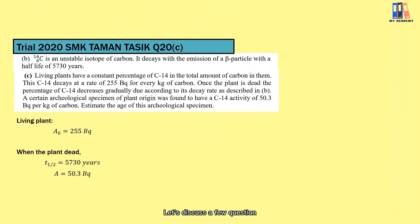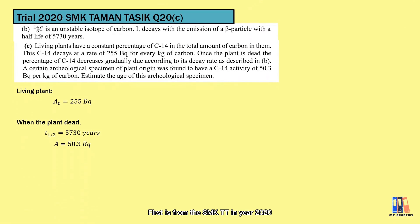Let's discuss a few questions. First is from SMKTT in year 2020. We will look at question C. Living plants have a constant percentage of C-14 in the total amount of carbon in them. This C-14 decays at the rate of 255 Bq for every kg of carbon, so this value is constant as long as the plant is living.